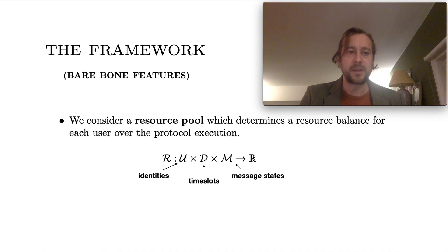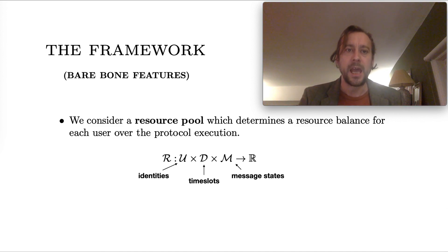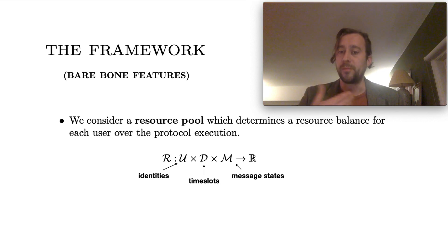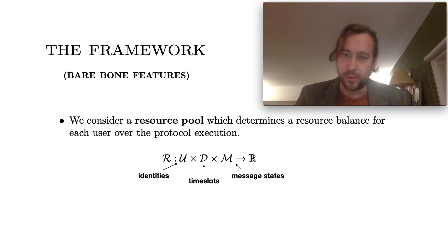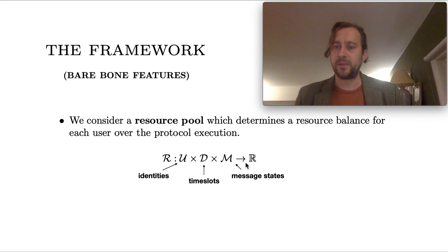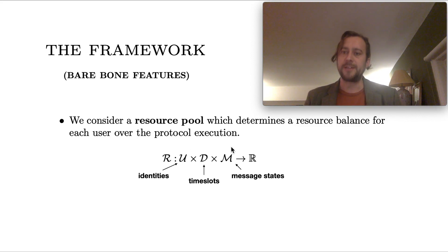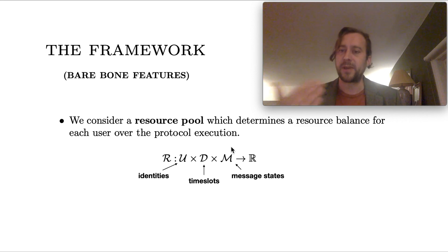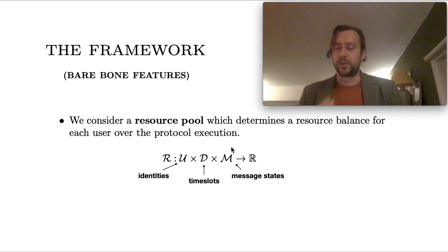Let me briefly sketch the framework. We consider protocols which run relative to a resource pool — this is a function which assigns a resource balance to each user over the protocol execution. In its most general form, the resource pool is a function R that assigns a resource balance, a real number, to each user at each time slot, possibly relative to a given message state. You can think of the message state as the set of messages that have been received by a given user. If we're dealing with a proof-of-work protocol, the resource balance will be a user's hash rate, independent of the message state. If we're talking about a proof-of-stake protocol, then the resource balance could depend both on the time slot and the message state.